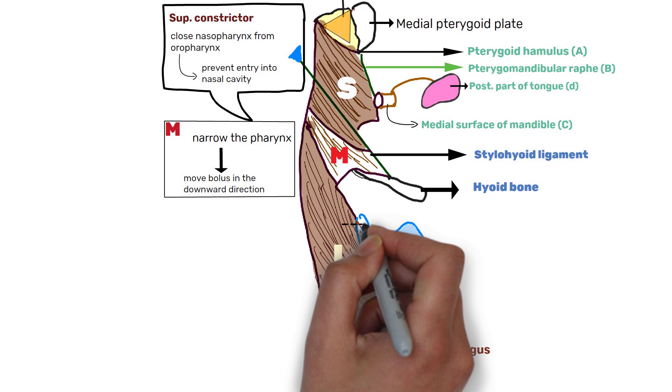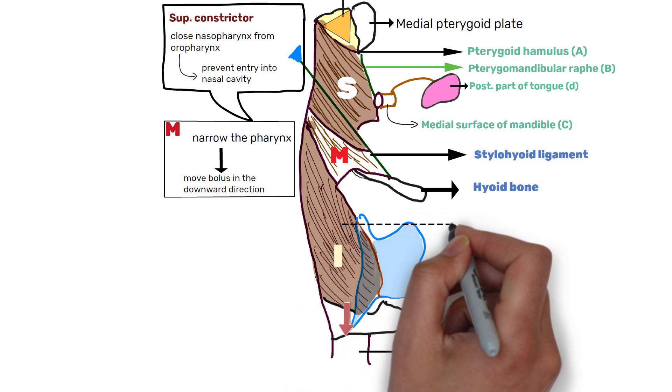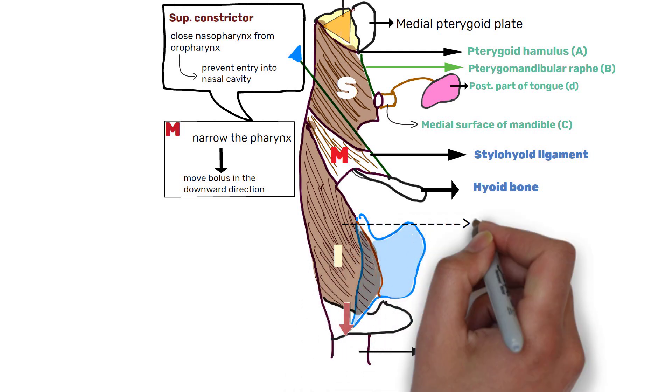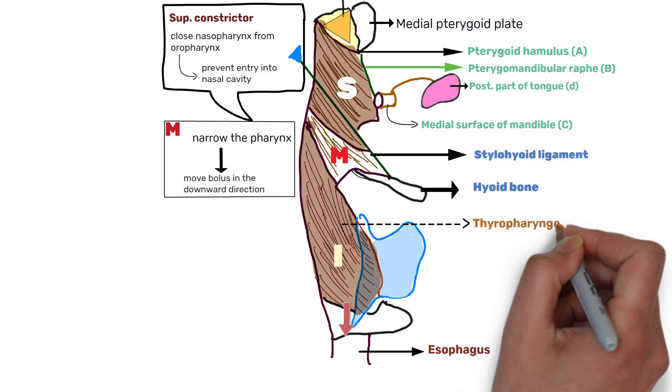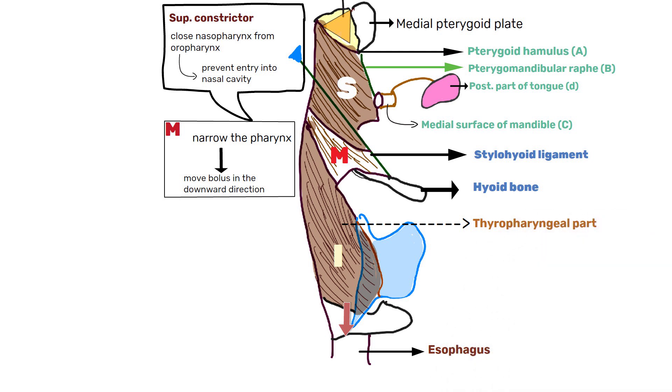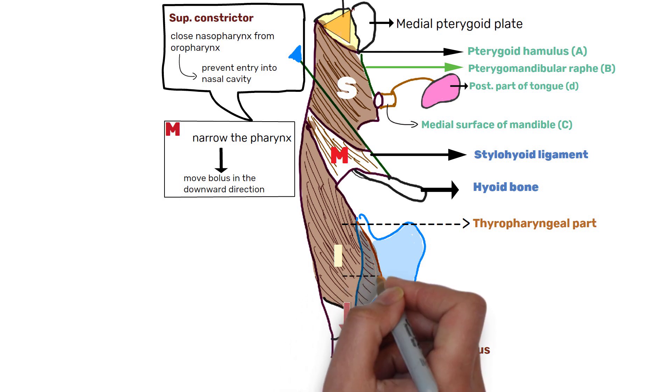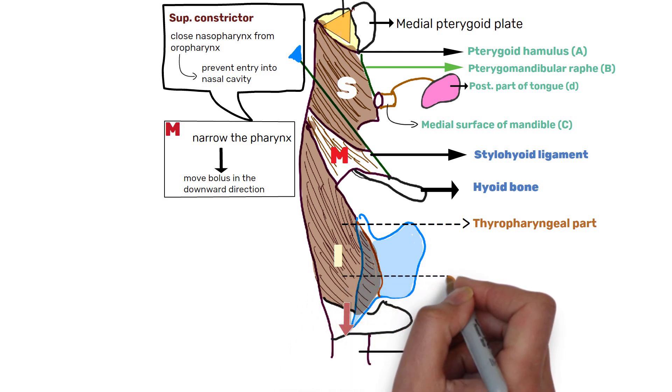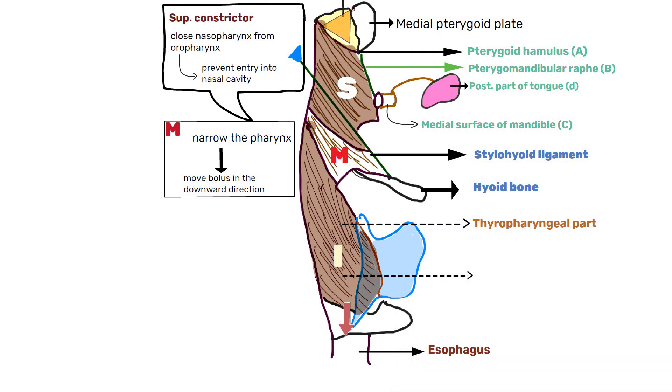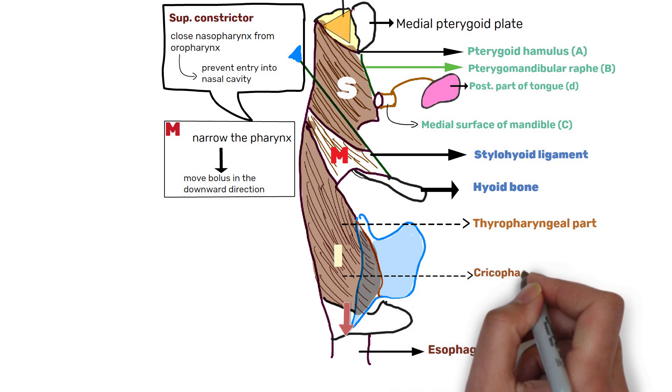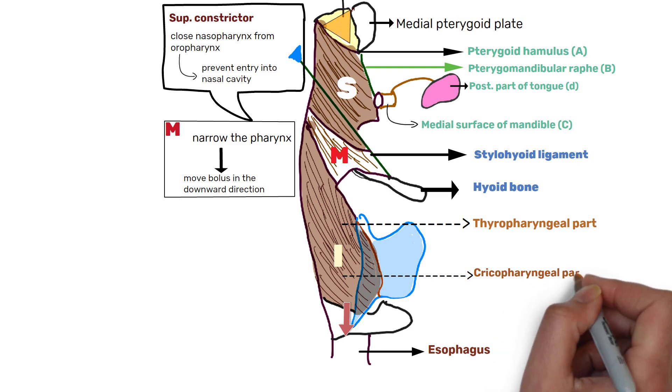And last muscle is inferior constrictor muscle. It comprises of two parts having two different origins. First, thyropharyngeus, the larger part that originates from the thyroid cartilage. And second is the cricopharyngeus, the smaller part deriving its origin from the cricoid cartilage.